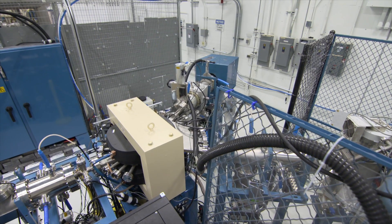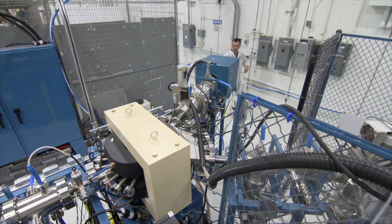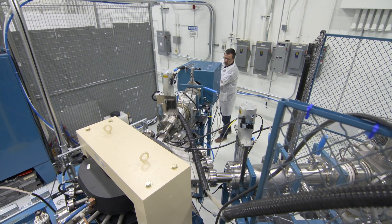The sputter source generates ions from solid targets through sputtering. Currents of several microamps on target are achievable.